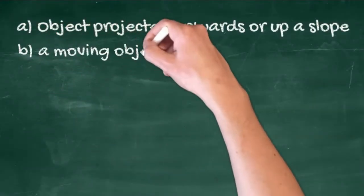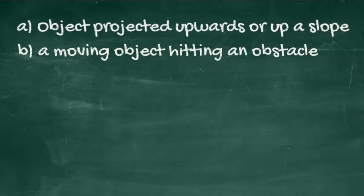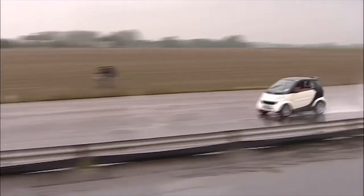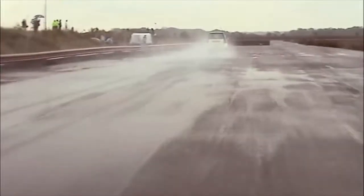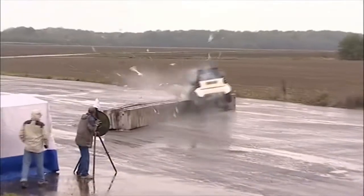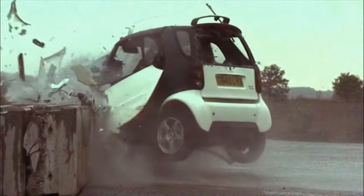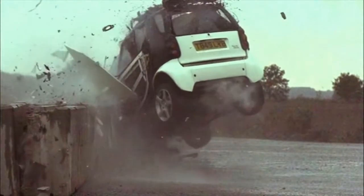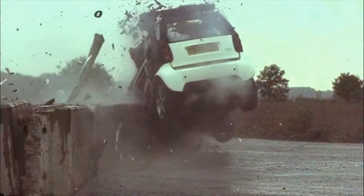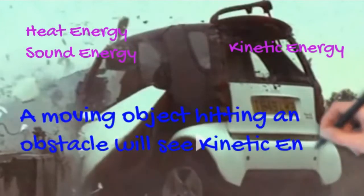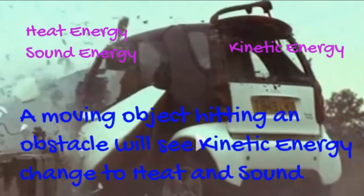The second change is when a moving object hits an obstacle. From 70 miles an hour to nought in one second — the little Smart hit with such energy that it moved 20 tons of concrete, leapt into the air and rebounded to the side of the road. The car starts with kinetic energy, and once it crashes into the wall or the fixed object, that kinetic energy is largely converted to heat or thermal energy.